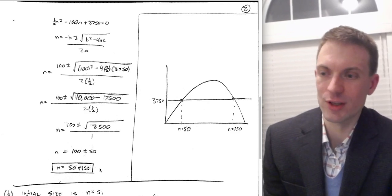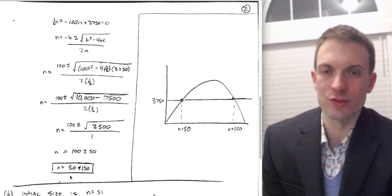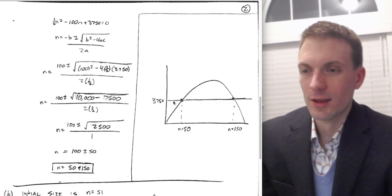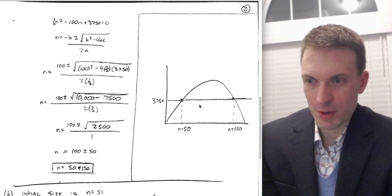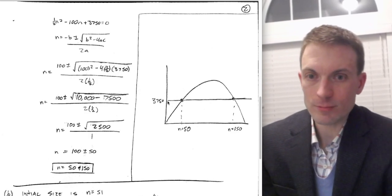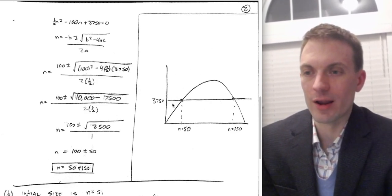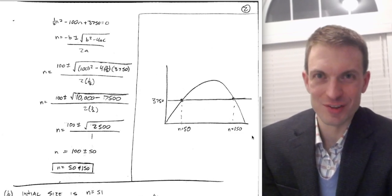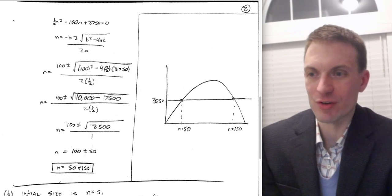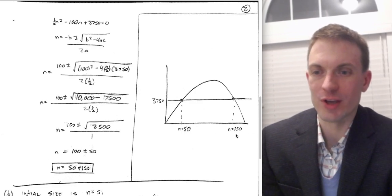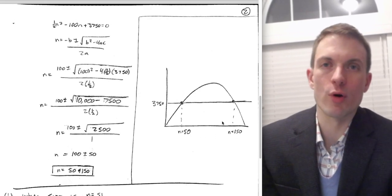We also want to include n = 0 as an equilibrium — don't forget the zero network. So here is our supply-and-demand model: the vertical axis is price, the horizontal axis is network size, the constant average cost line is at 3750, and the solutions are a network size of 50 and a network size of 150.